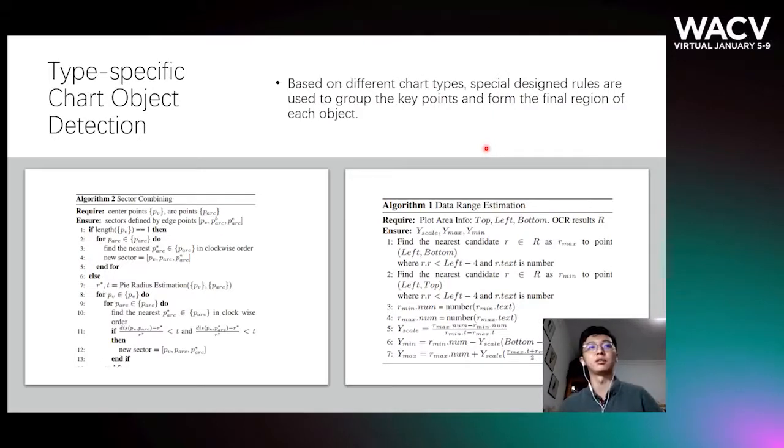We apply type-specific chart-object detection. Based on different chart types, specifically designed rules are used to group the key points and form the final range of each object.